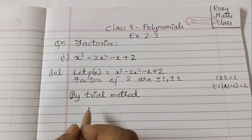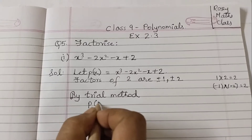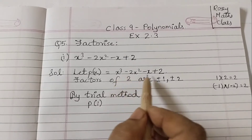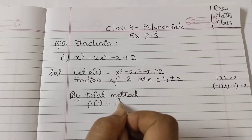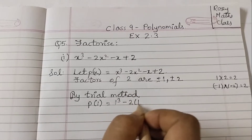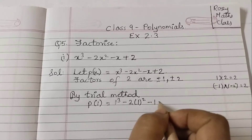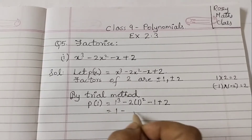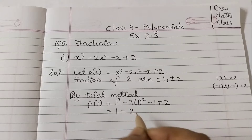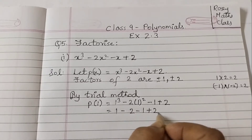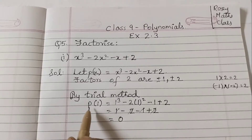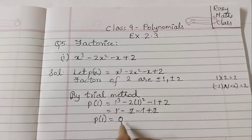So p of x — first we will find p of 1. We take x as 1 and substitute 1 in place of x. So that is 1 cubed minus 2 times 1 squared minus 1 plus 2. 1 cubed is 1, minus 2, minus 1 plus 2. So minus 2 plus 2 cancels out, and 1 minus 1 gives 0. So p of 1 is equal to 0.